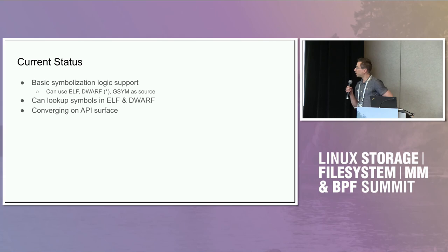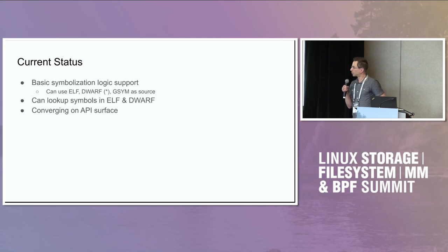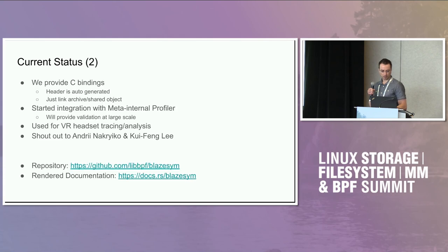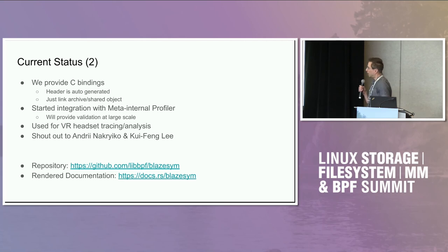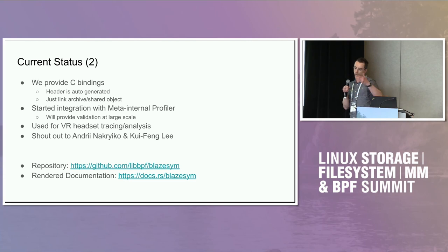This is still somewhat early in development. We are currently converging on the API surface, so we hope to have a more stable interface in the near future. We know there are still some things we want to rename and rearrange, but in large terms we are almost there. What I didn't mention so far is that the library is written in Rust, which has implications for the largely C-based ecosystem surrounding BPF. We provide C bindings for that purpose — an auto-generated header you can include — and after you build the Rust project, what falls out is a static archive or shared object you can link to.